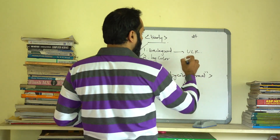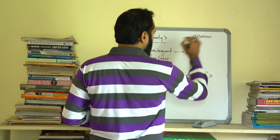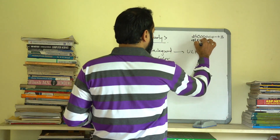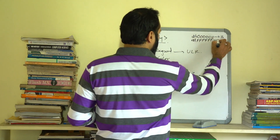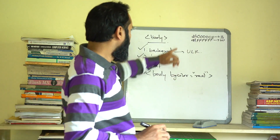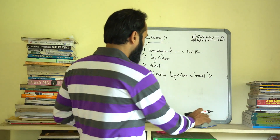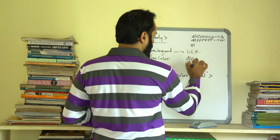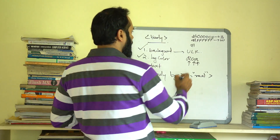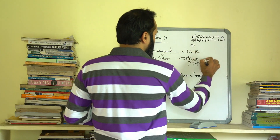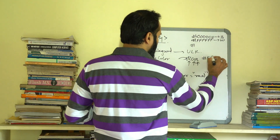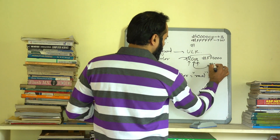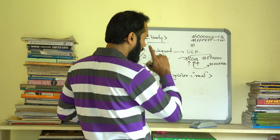To use a hexadecimal color code, you start with a hash symbol. To find black, we use hash followed by 000000. For white, it is hash FFFFFF. For yellow, we use hash with the appropriate combination of red, green, and blue values.